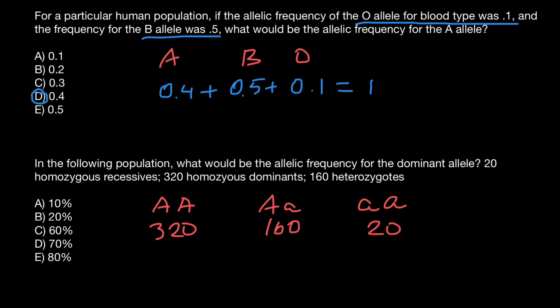And we have to find the frequency of the dominant allele. As you see, we have three genotypes, but these three genotypes are made by two alleles: dominant allele A and recessive allele a. So how do we find the frequency of the dominant allele?